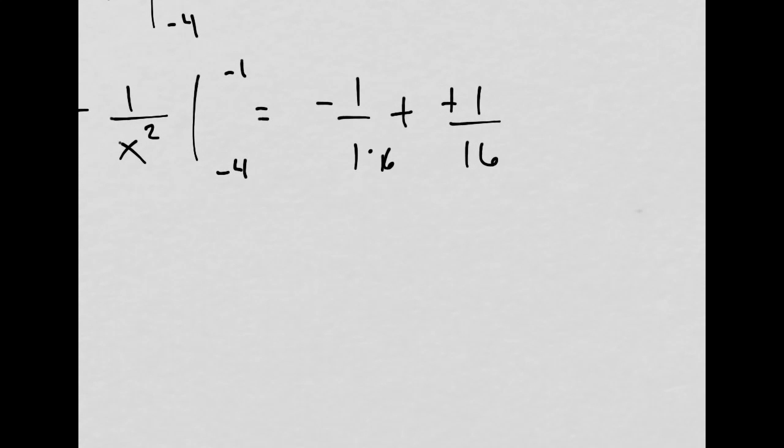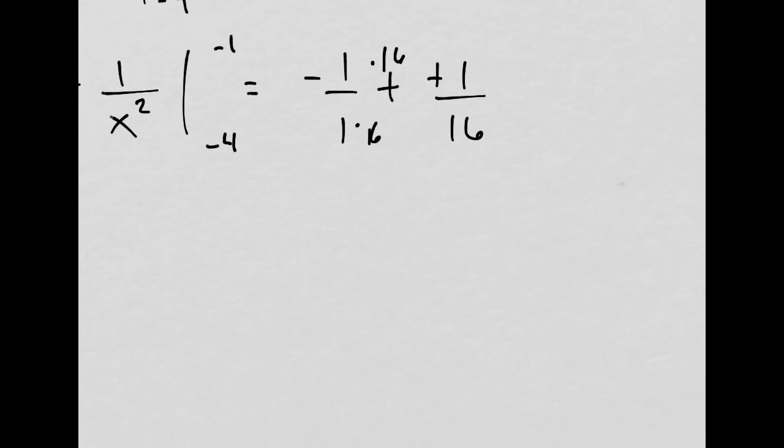So, that's all times by 16 times by 16. This will be negative 16 over 16 plus 1 over 16, which is negative 15 over 16.